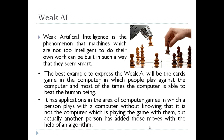Weak artificial intelligence is the phenomenon where machines which are not too intelligent to do their own work can be built in such a way that they seem smart. We have machines that are not too intelligent to do their own work, but we have built them in such a way that they seem smart — and by their working they can even defeat human beings. The best example to express weak AI would be a card game on the computer in which people play against the computer, and most of the time the computer is able to beat human beings.